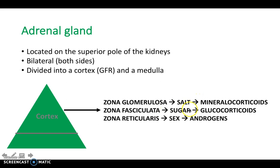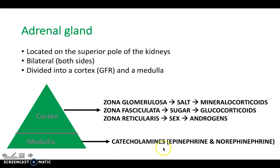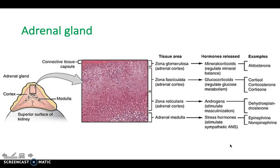A common mnemonic is salt, sugar, sex. The zona glomerulosa produces salt — in other words, mineralocorticoids. The zona fasciculata produces sugar — in other words, glucocorticoids. And the zona reticularis produces sex — in other words, androgens. More specifically: an example of a mineralocorticoid is aldosterone; an example of a glucocorticoid is cortisol or corticosterone; and the zona reticularis produces androgens such as dehydroepiandrosterone, which stimulates masculinization.